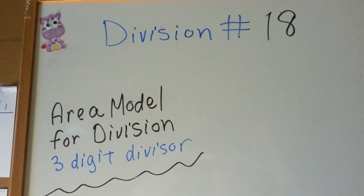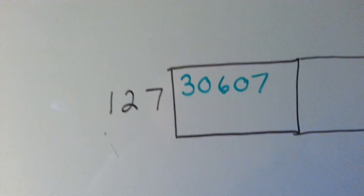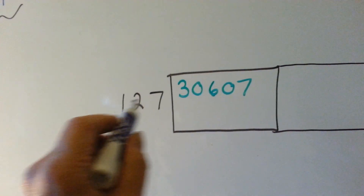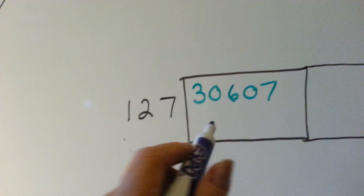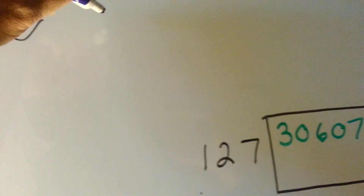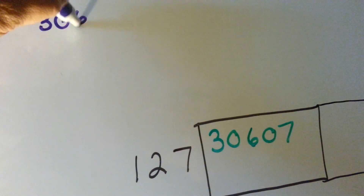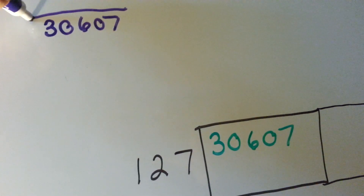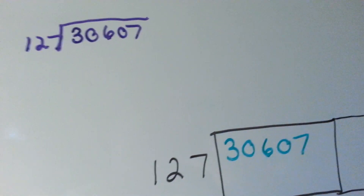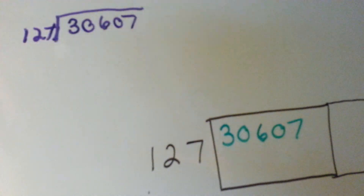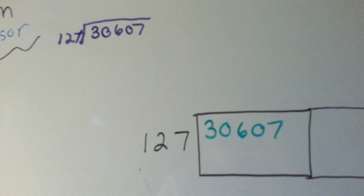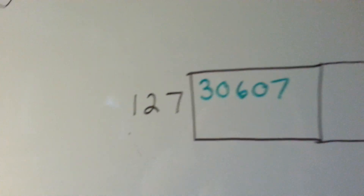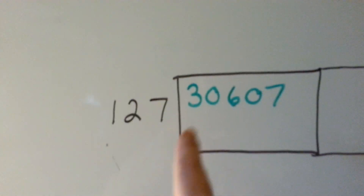Area model for division with a three-digit divisor. The first thing I'm going to show you is that we have 127 on the outside of this box and this big number on the inside. If we were to do long division it would have looked like this, done the old-fashioned way — that would have been on the inside, this would have been on the outside, just like this.